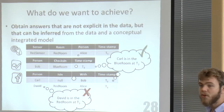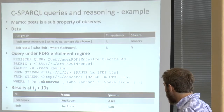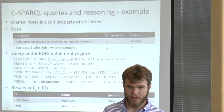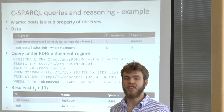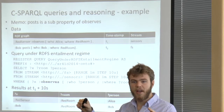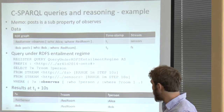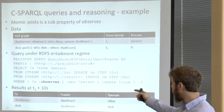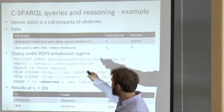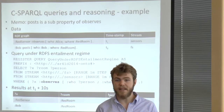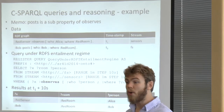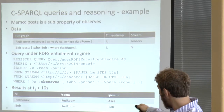We also have the possibility to exploit reasoning. With reasoning, we mean something related to the schema behind our data model. This query exploits the relation between 'post' and 'observe', which are subproperties, to retrieve all results according to our ontology schema. The ontology exploits RDFS reasoning to know that 'post' is a subproperty of 'observe', and that's how we get both pieces of information together.